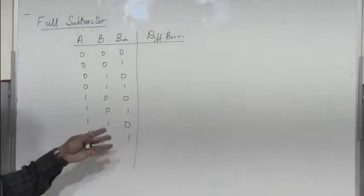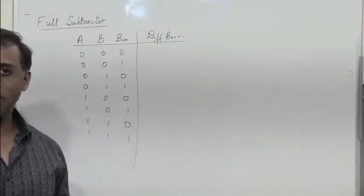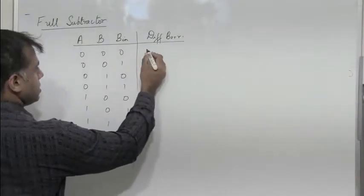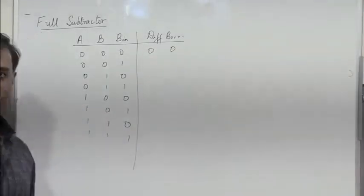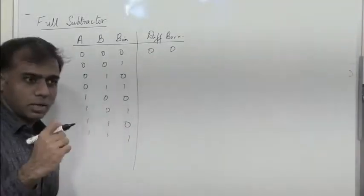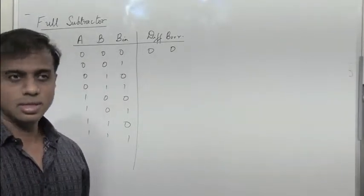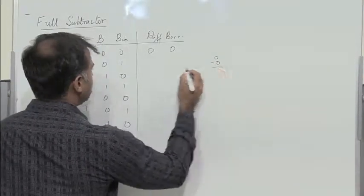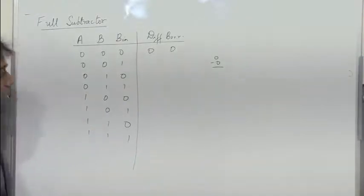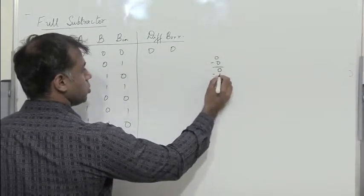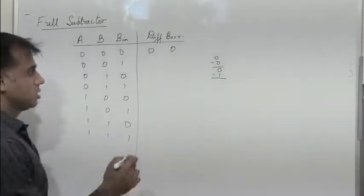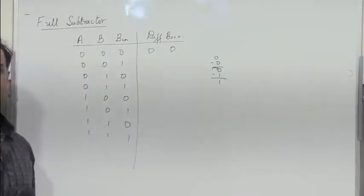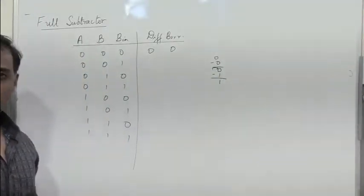Since we need to find the difference and borrow, we have to very carefully fill in the truth table. Now 0 minus 0 minus 0: difference is 0, borrow is 0. To identify the difference and borrow, let us consider two bits at a time. So 0 minus 0 will give 0 itself, as we have seen in the half subtractor truth table.